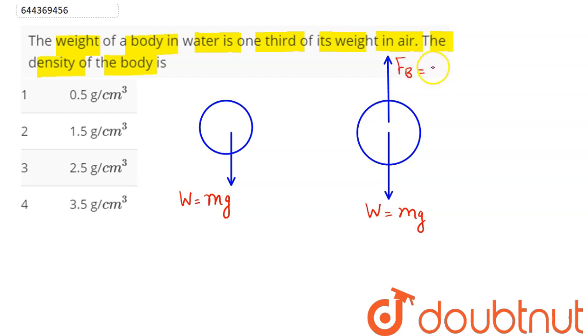Next, we can say here buoyancy force will be acting upward, given by the formula ρl into V into g. And this here is equal to ρs into V into g. Now here it is given that this, let's say, apparent weight which is equal to Fb dash is equal to our true weight, that is W minus buoyancy force, is given out here as one third of its weight in air, that is W by three.